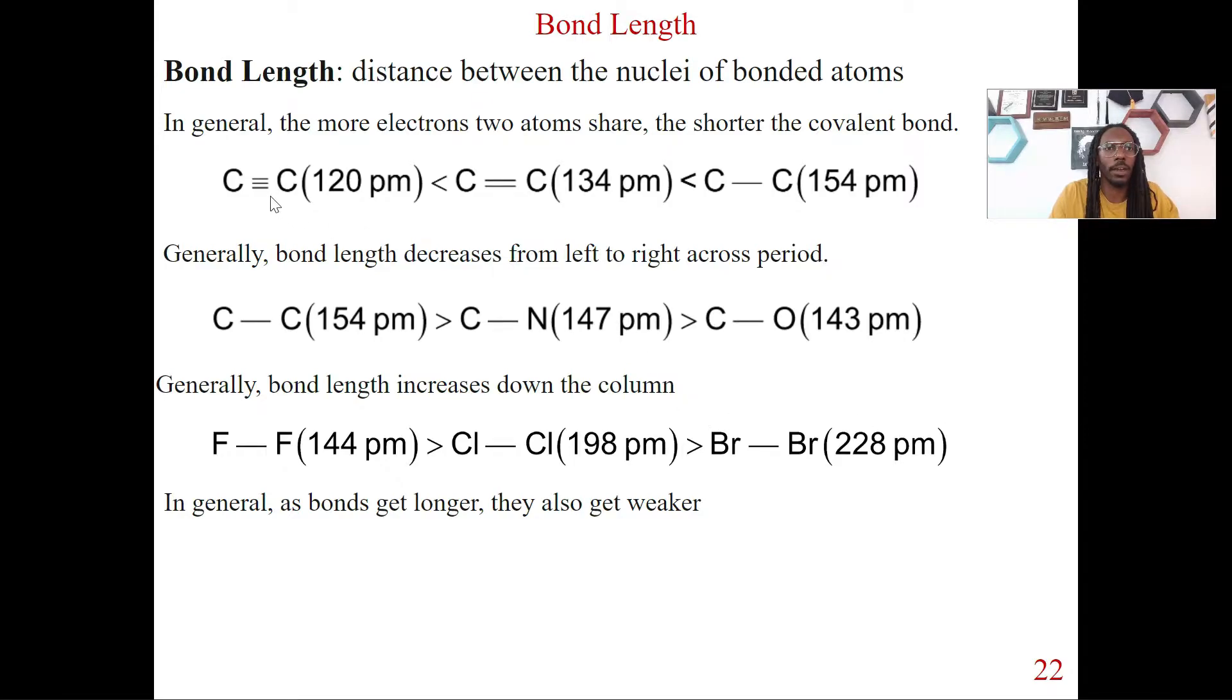So we look here, we got a carbon-carbon. All these are carbon-carbon bonds, but essentially if you share more electrons, in this case a triple bond, your bond length is going to be shorter. Okay, so we look at a triple bond compared to a single bond carbon-carbon bond, we're going to see that the bond length is actually longer for those.